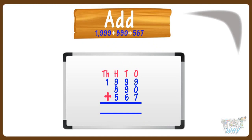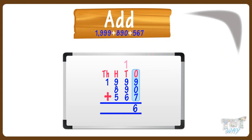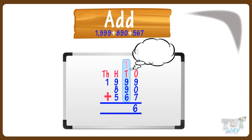Now, start adding the numerals from ones place. 9 plus 0 plus 7 equals 16. When the sum is a two-digit number, always write the ones place digit in the answer, and carry over the tens place digit to the next higher place value. Now, add the tens place digits. 1 plus 9 plus 9 plus 6, we get 25.